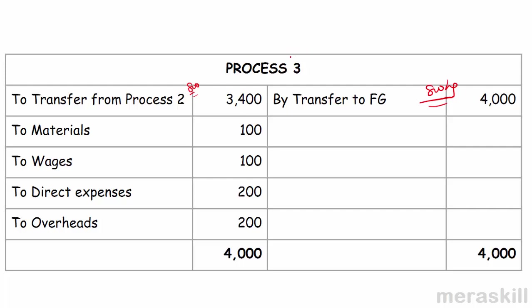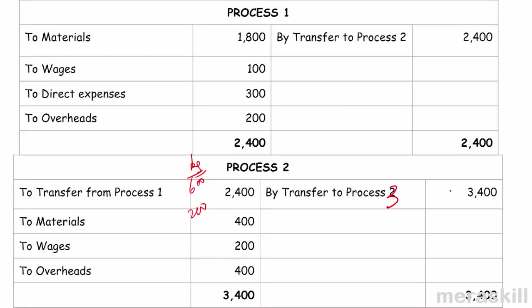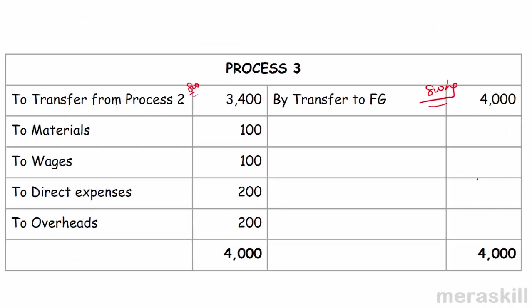When we prepare a process account, we debit it with all the expenses and credit it with whatever is transferred out. When there is a transfer of goods from process two to process three, the receiving department is debited and the giving department is credited. So process two is credited, process three is debited with all other costs of that process, and finally the output is transferred to finished goods.